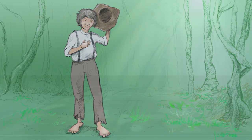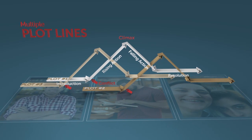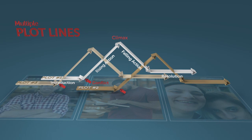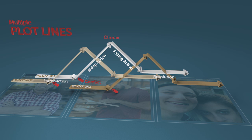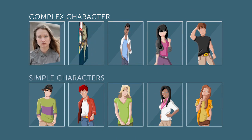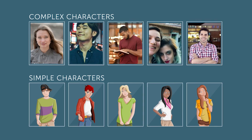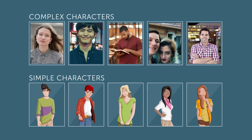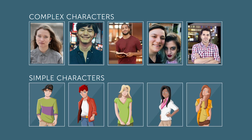Stories with multiple plot lines usually contain several complex characters, which adds a challenging complexity to the story. A story with multiple plot lines shows the collision between the worlds of several complex characters. Stories include both simple and complex characters, but complex characters are more true to life. Depending on the author's purpose, both types may be appropriate, and the combination of the two makes the story more compelling for all readers.